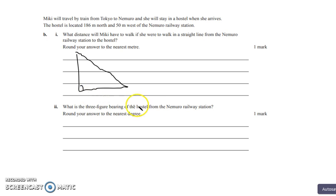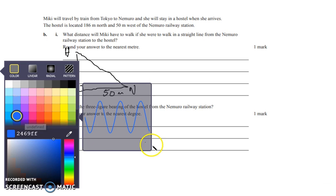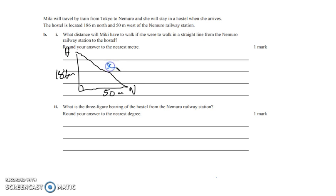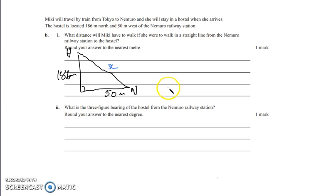We've got our diagram, our right angle, and we have Narimo station and we have our hostel up here. So we've gone 50 meters west, so never eat soggy wheat-bicks, and then 186 meters north. So if we were to solve for this, the x, we have two pieces of information, two sides, and we're trying to find the other side. So we can use our Pythagoras theorem. So c squared equals a squared plus b squared. So in simple, we can put in our information of 186 squared plus 50 squared, which would equal 192.6 meters. And the question is asking for the nearest meter, so 193 meters.